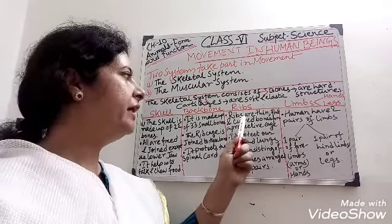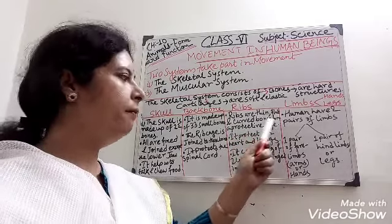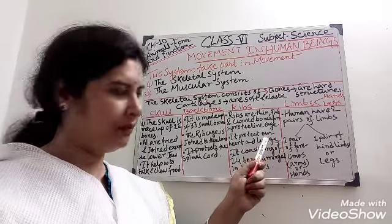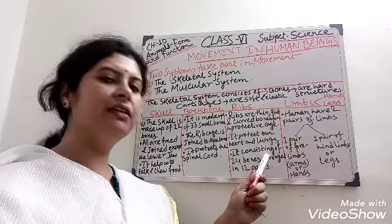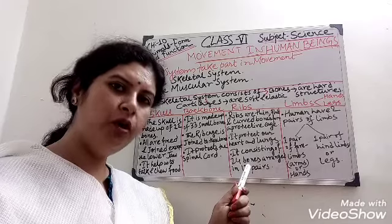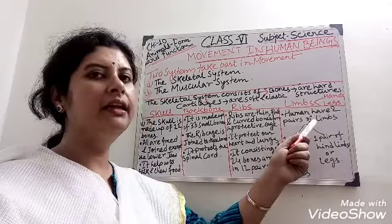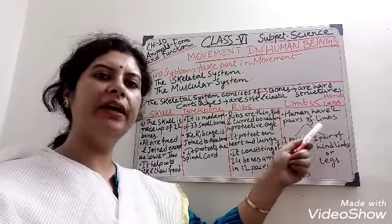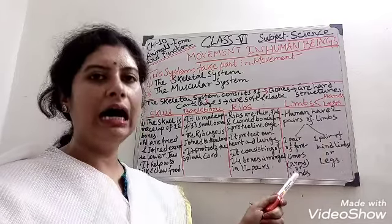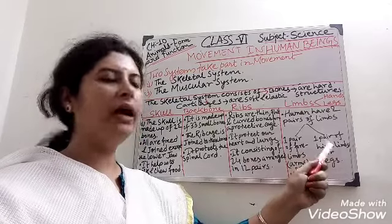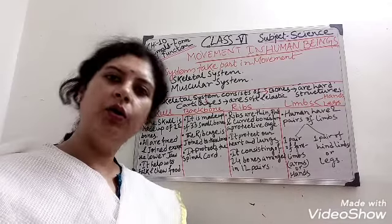Next, ribs. Ribs are thin, flat, curved bones that form a protective cage known as the rib cage. It protects our heart and lungs. It consists of 24 bones arranged in 12 pairs. Next, limbs. Humans have two pairs of limbs: one pair of forelimbs — arms or hands — and one pair of hind limbs, or legs.